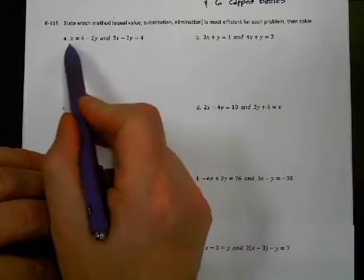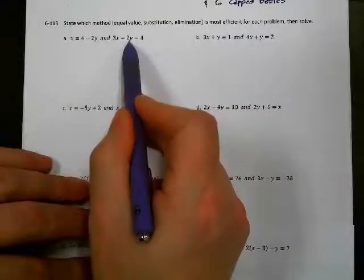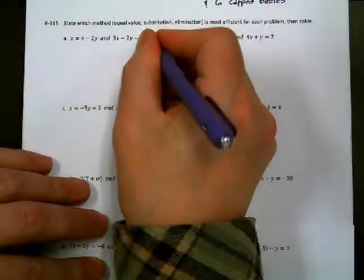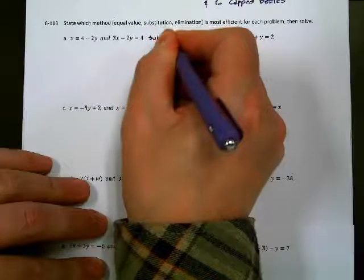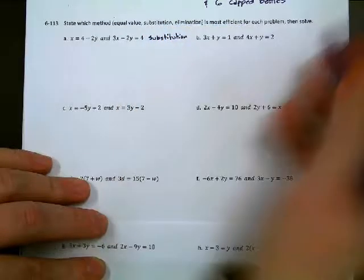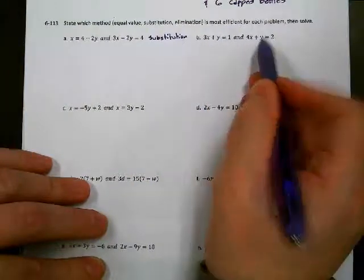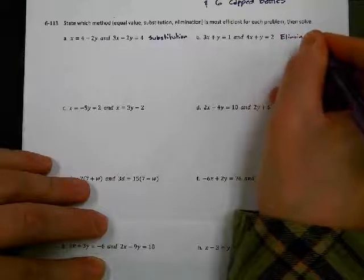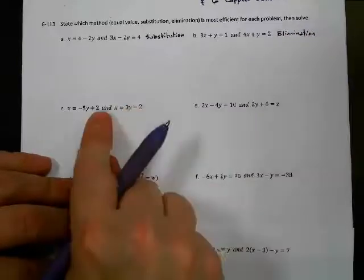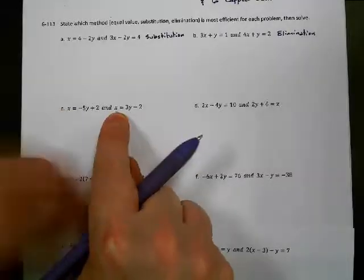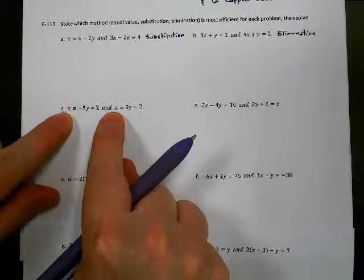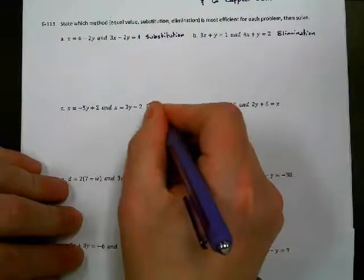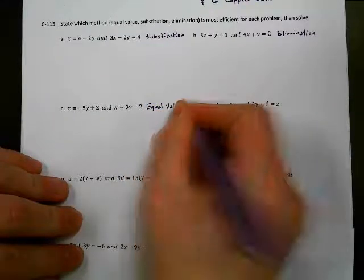I have an isolated x, but nothing's isolated here. So one variable isolated, that's going to be substitution. So this should be a substitution. Let's go to the next one. They're both in standard form. That's elimination, definitely. Let's see this one. The x is isolated and the x is isolated. They're both isolated. This is equal values. The x's are the same, so these two are the same.